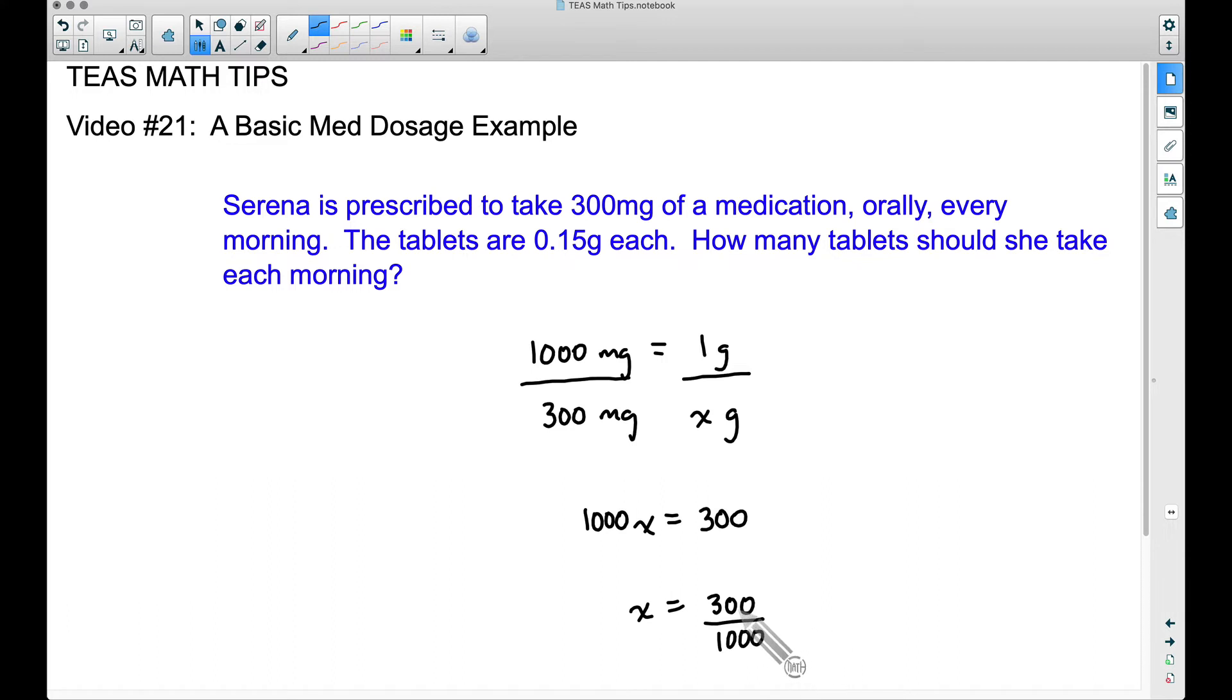Now you could simplify this by dividing the top and bottom by 100. Dividing by 100 up top, 300 divided by 100 is 3 and 1,000 divided by 100 is 10. Now if you did grab a calculator there and actually divided this, 300 divided by 1,000, same thing as 3 divided by 10, they're both going to be equal to three tenths or 0.3.